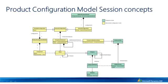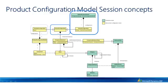Now let's look at the product configuration model session concepts. The root concept here is the product configuration. There are two deviations of this concept. One is the variant configuration, which is produced when successfully configuring a configured product along with a distinct product variant. The other one is a template configuration. The template configuration concept is used to model a template configuration session, which is a partially configured instance of a product configuration model.